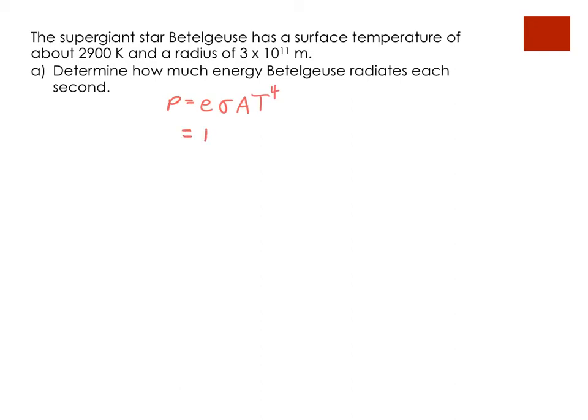Then we have the Stefan-Boltzmann constant. Yep, go find that in your data booklet. Times the area of a sphere. Again, go find that in your data booklet. 4 pi r squared times the temperature to the power of 4. Make sure you put this in your calculator correctly. You should get an answer of 4.5 times 10 to the power of 30 watts.